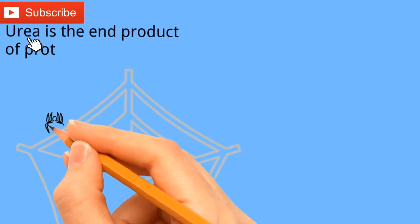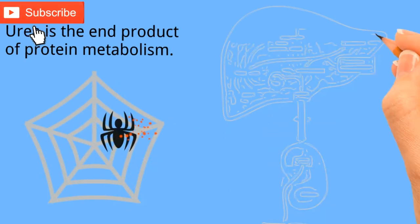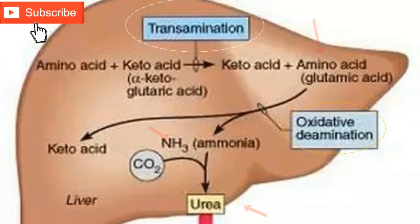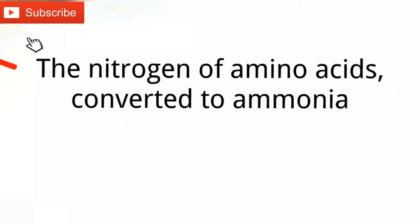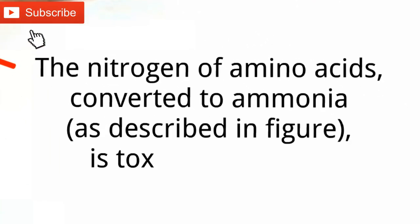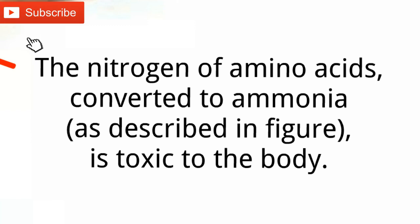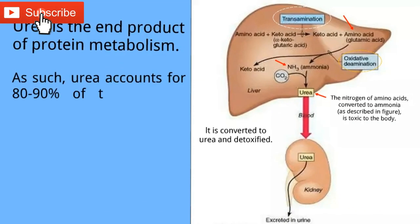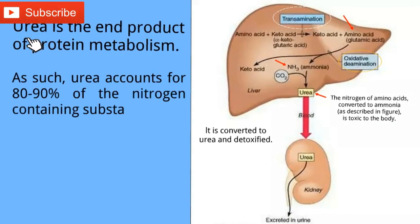Urea is the end product of protein metabolism. In transamination, amino acids convert to glutamic acid and then to ammonia by oxidative deamination. The nitrogen of amino acids converted to ammonia is toxic to the body. It is converted to urea and then detoxified. Urea accounts for 80-90% of the nitrogen-containing substances excreted in urine.